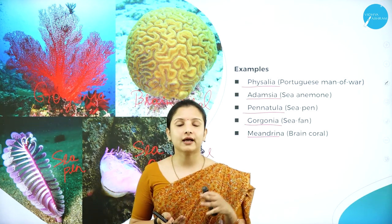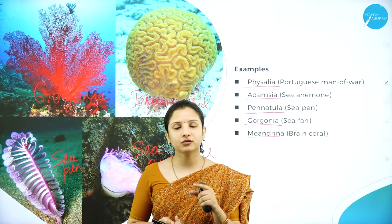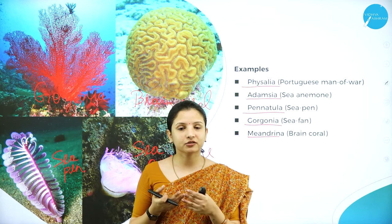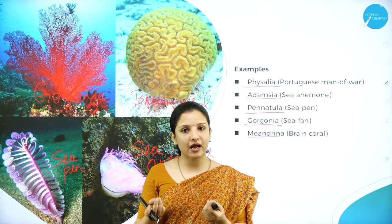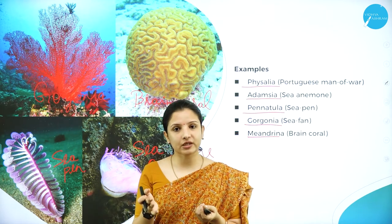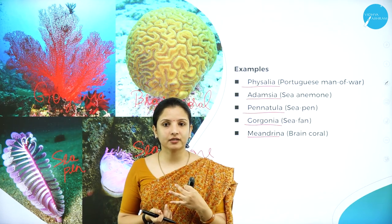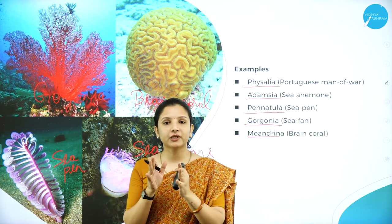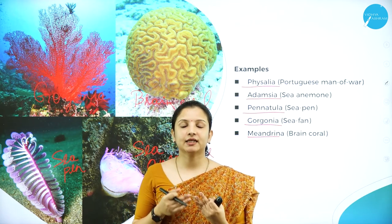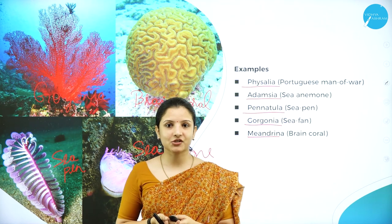I hope you have understood this session wherein I have discussed about two phyla in today's class - phylum Coelenterata and phylum Porifera. Phylum Porifera are nothing but the sponges, and Coelenterates or Cnidarians have nematocysts in the tentacles which provide protection to the organism. Based on those characteristics, they have been grouped as phylum Porifera and phylum Coelenterata or Cnidaria separately. In the next coming sessions we shall discuss about the other phyla in the animal kingdom. Thank you.